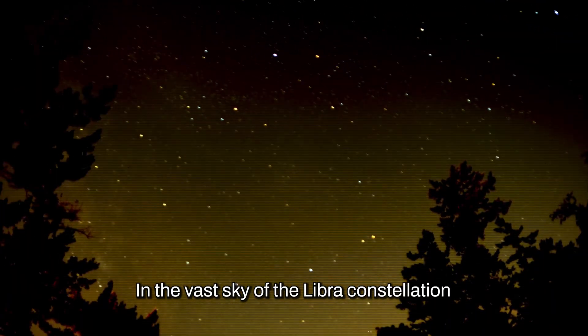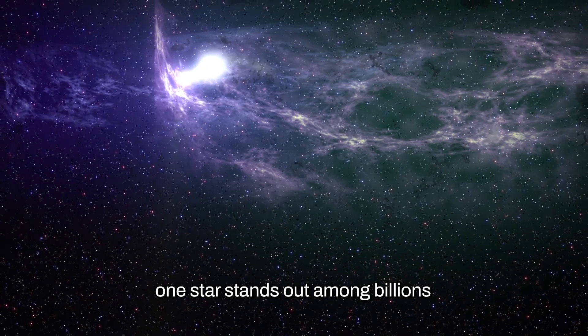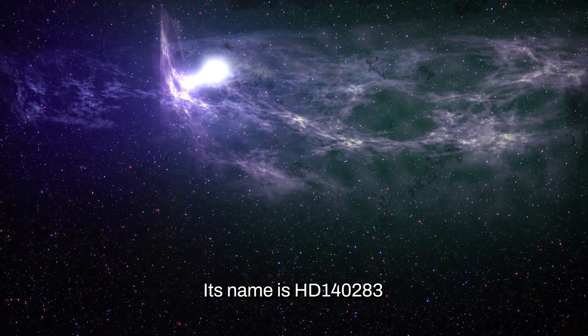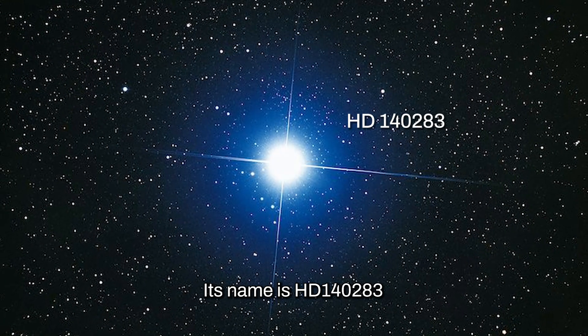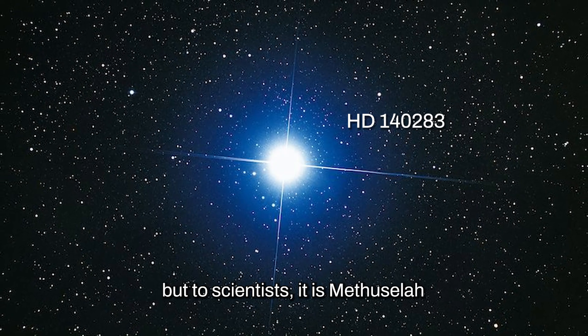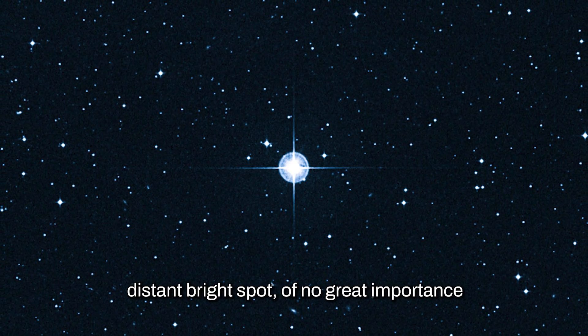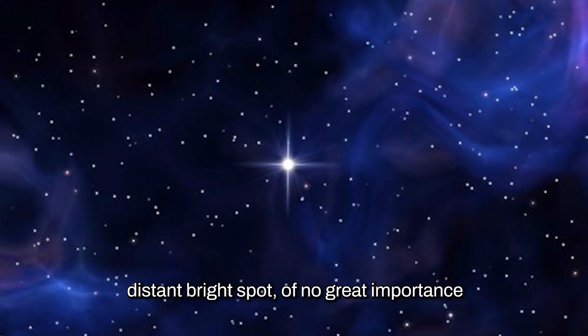In the vast sky of the Libra constellation, one star stands out among billions. Its name is HD140283, but to scientists, it is Methuselah. For decades, it was nothing more than a distant bright spot of no great importance.